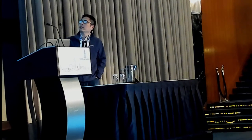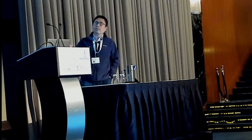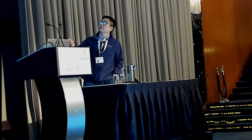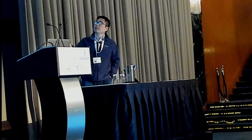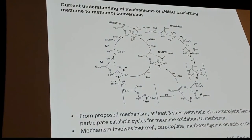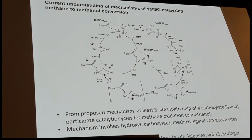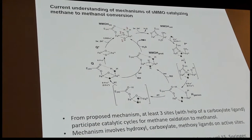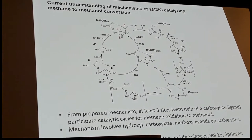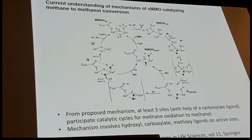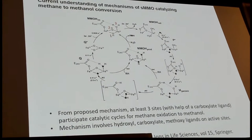Iron-oxo groups can directly convert methane to methanol. But if we look at the mechanism, most of the time this active site is occupied by ligands such as hydroxyls, aqua, carboxylates, or methoxy groups. Therefore, we need to pay more attention to these ligands in terms of understanding the real active sites. There is more than one site involved in catalysis — I highlight these in numbers.